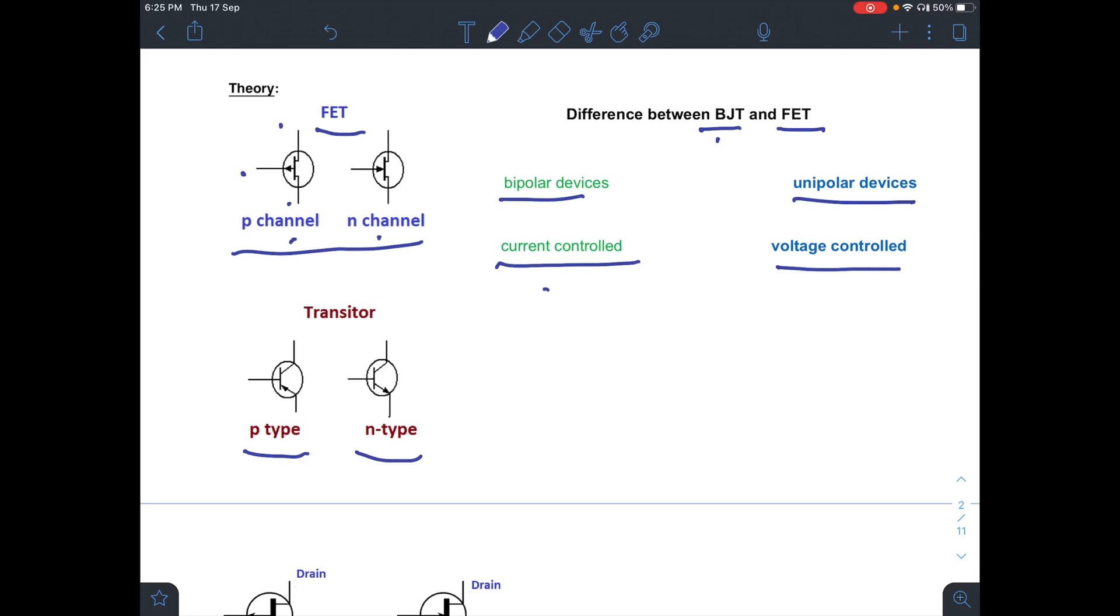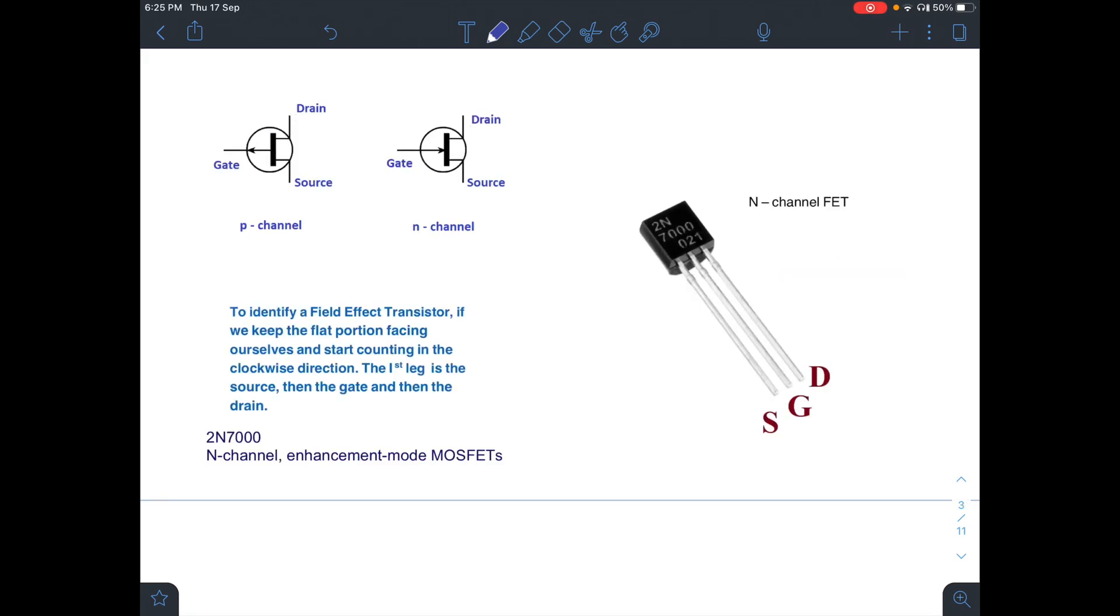In transistor, the input current controls the output current. But in FET, the input voltage controls the output current. These are the three terminals: source, gate, and drain of a FET.